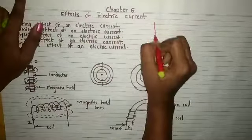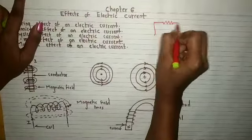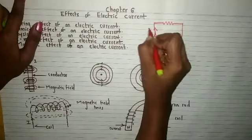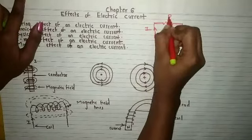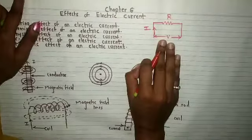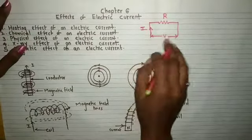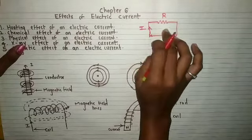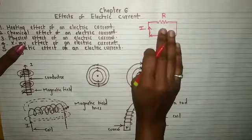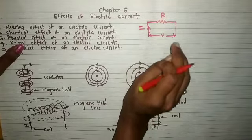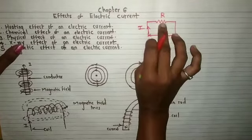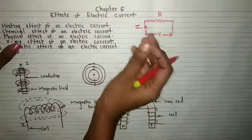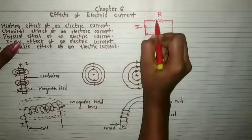Consider this is our circuit. This is the voltage and this is the current I flowing through it, and this is the resistance. Whenever the current I flows through the electric circuit, it is opposed by the resistance. Every conductor has some resistance, so it is opposed by resistance of the circuit. There is some energy that is required to overcome this resistance.